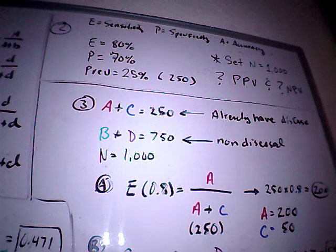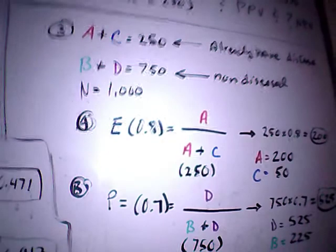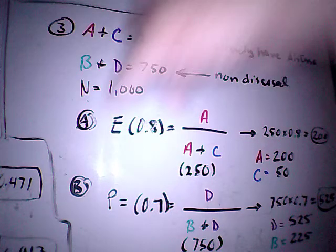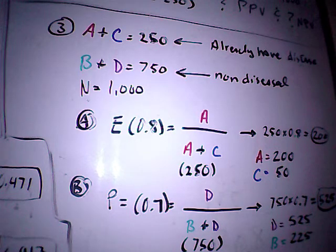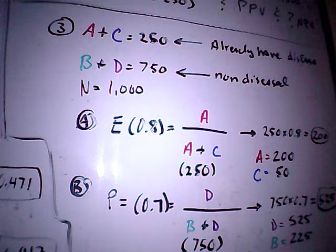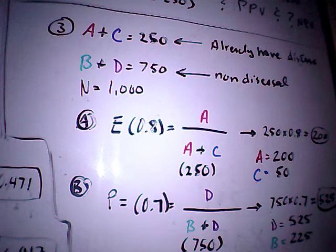So now I'm going to move down to step 3 here, and I need to figure out what A, B, C, and D are. So if you remember when I said A plus C equals the prevalence, we know the prevalence is 25% from above, so A plus C in this case must equal 250 people because 250 is 25% of the 1,000 people that we had said we were looking at.